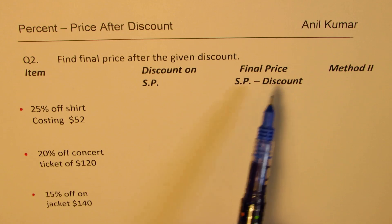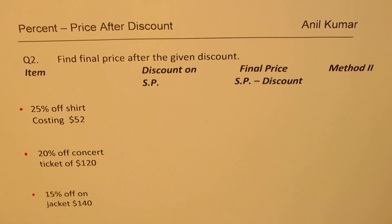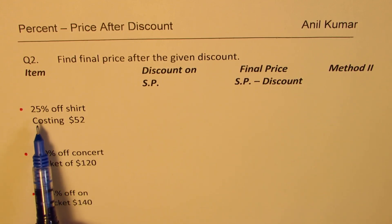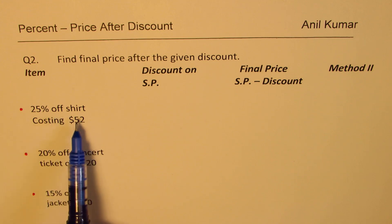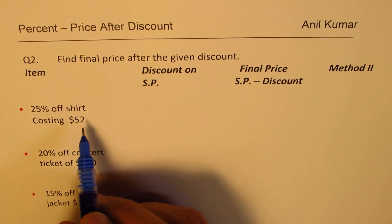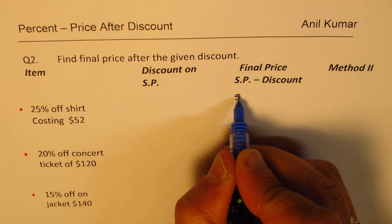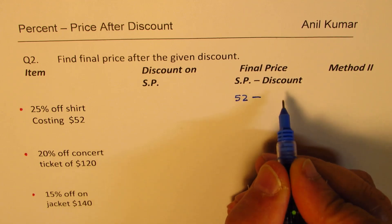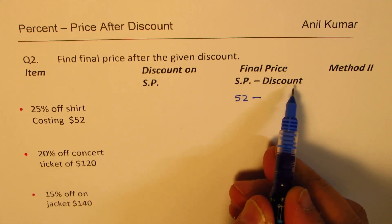The very first one is 25% off shirt costing $52. It means what? It means that the actual price is $52, which is the selling price, but we'll give you something less. And what is the discount?